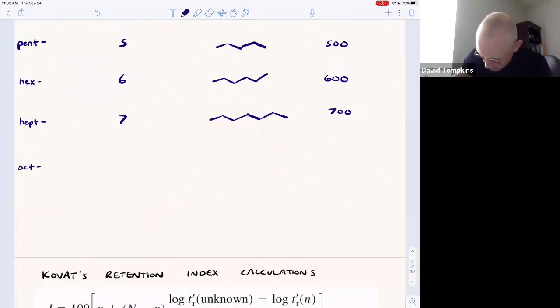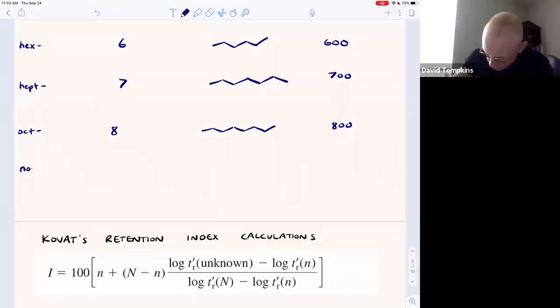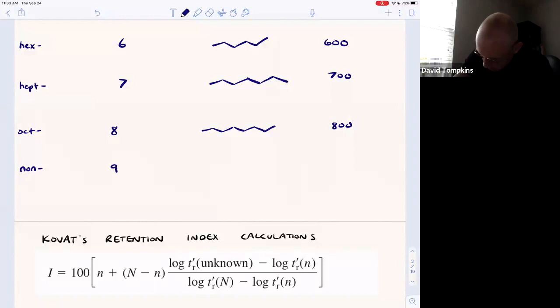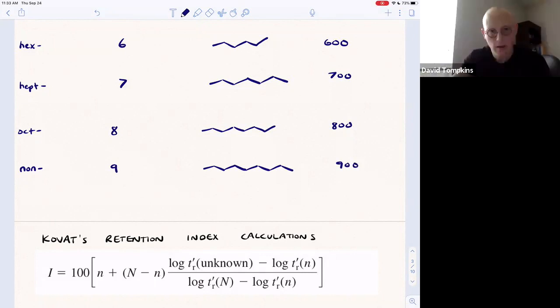Octane, which is eight carbons long. Nonane, nine carbon hydrocarbon. And then finally, decane, which is a 10 carbon hydrocarbon.